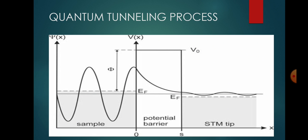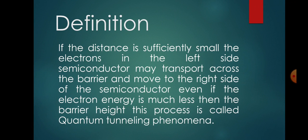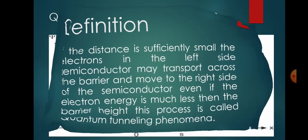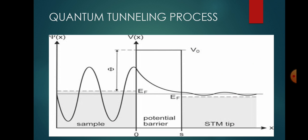Even if the electron energy is much less than the barrier height, this is called the quantum tunneling phenomenon. As shown in this diagram, we have some electrons here — this is the barrier height — and they get transported to the other side of the semiconductor. This process is called the quantum tunneling phenomenon.